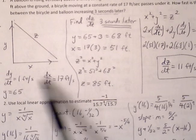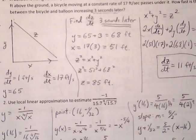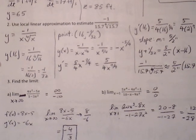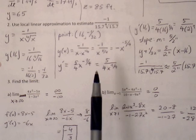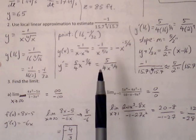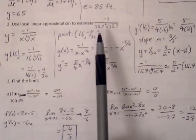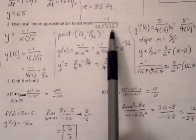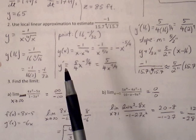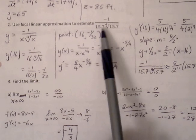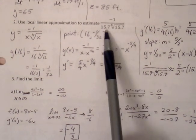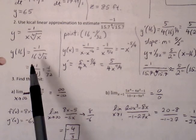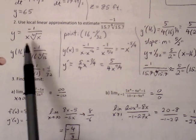Number two: linear approximation problem. Use linear approximation to estimate negative one over 15.7 times the fourth root of 15.7. First thing we do is we want to find the function that we'll be using, so we remove the decimal value, the decimals, in place of it we put the x. So now we have negative one over x times the fourth root of x.